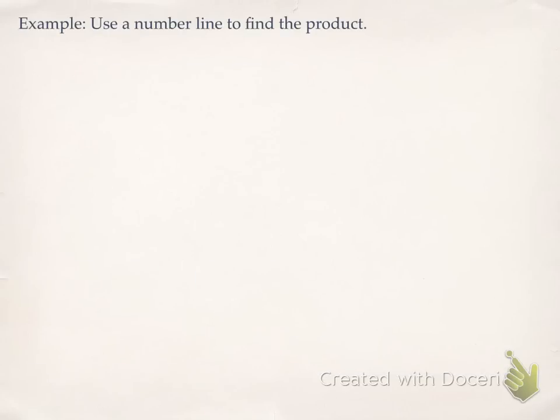The first model that we're going to use is a number line. So I want to use a number line to find the product. I'm going to ask that we do 1 quarter, so there's our fraction, and we're going to multiply that by 5.